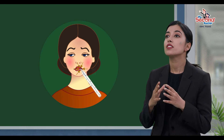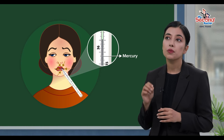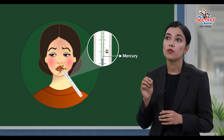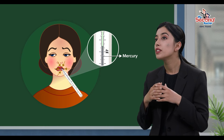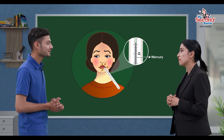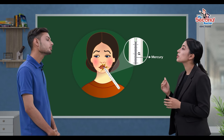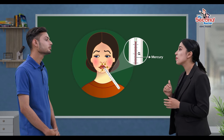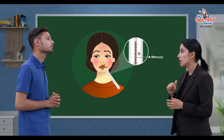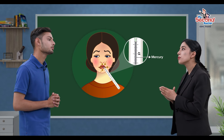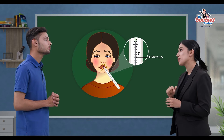Our body heat enters the thermometer and heats the liquid mercury. The liquid mercury increases in volume and rises up the capillary tube. The level at which the mercury rises in the capillary tube indicates the temperature of our body.